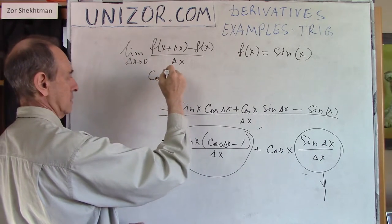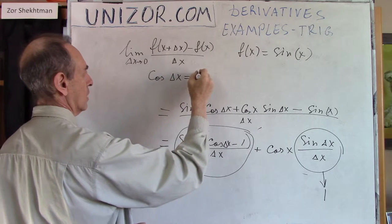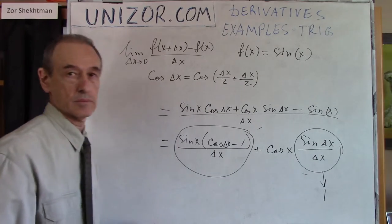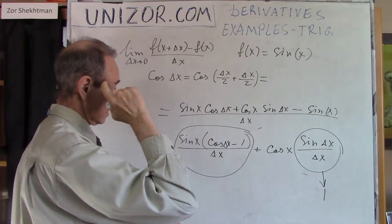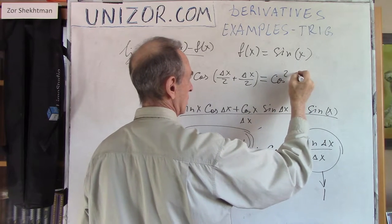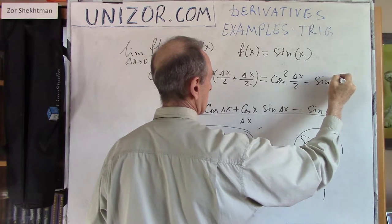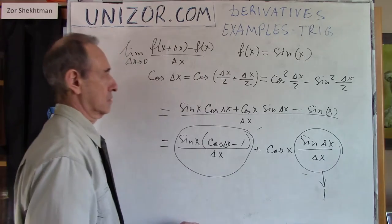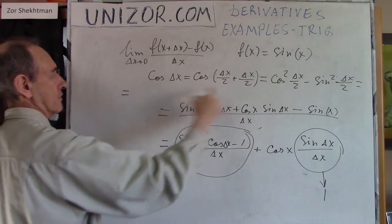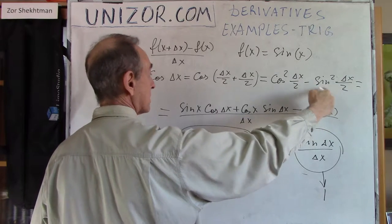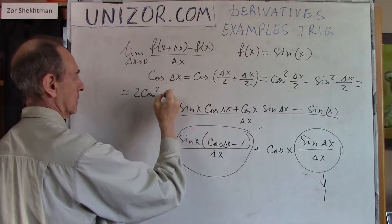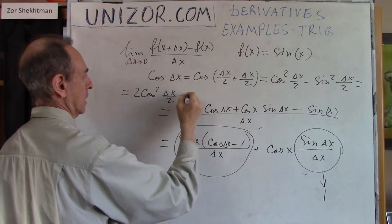Cosine of delta x is equal to cosine of delta x over two plus delta x over two, which is cosine of the sum. So it's cosine cosine minus sine sine. So it's cosine squared delta x over two minus sine squared delta x over two. We will have two cosine squared, or in other words, if sine squared is one minus cosine squared, we will have two cosine squared delta x over two minus one.